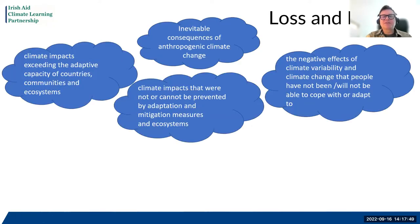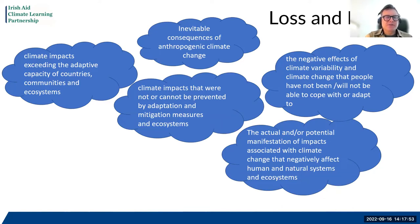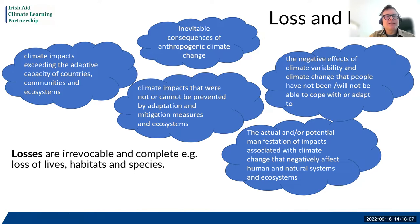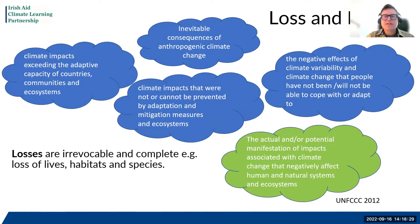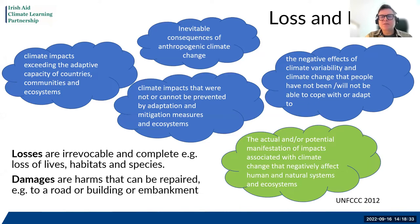Here is a range of different definitions that have been proposed in different documents and by different organizations — very similar to the kinds of things put in the chat. What we're really talking about are losses caused by climate change that are irrevocable and complete, such as the loss of lives, habitats, and species; or damages, which are harms that can in theory be repaired but may not be if the right kinds of response and recovery are not put in place. The UNFCCC has suggested one framing: that loss and damage is the actual and/or potential manifestation of impacts associated with climate change that negatively affect human and natural systems and ecosystems.